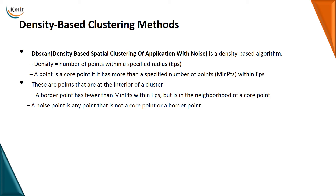Minimum points are the points used to find the core points. Density is equal to the number of points within a specified radius, that is epsilon. A point is a core point if it has more than a specified number of points — that is your minimum point. The number of data points inside the circle within the epsilon (radius) is called the minimum point.